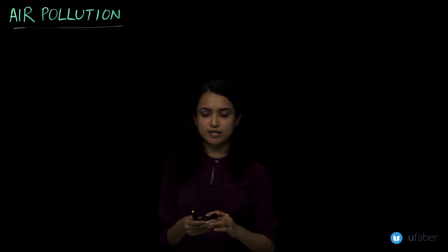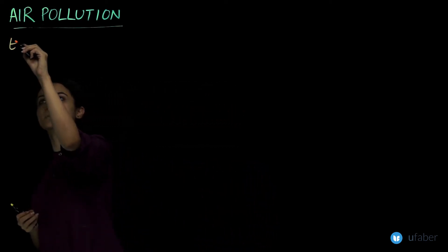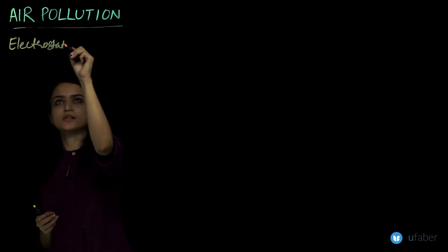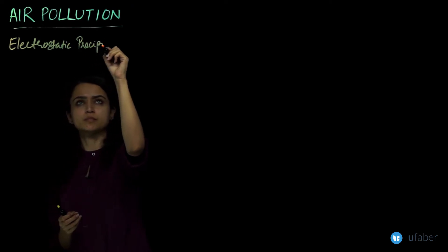The final kind of air pollution control device that is going to be discussed in this lecture is electrostatic precipitator. So an electrostatic precipitator.